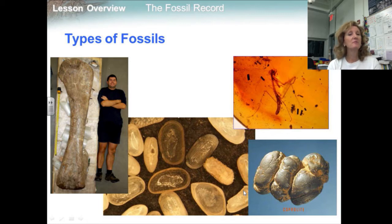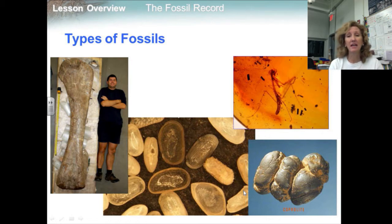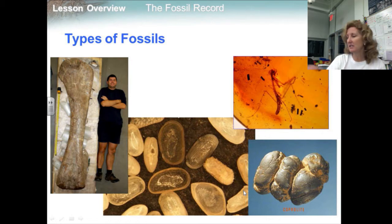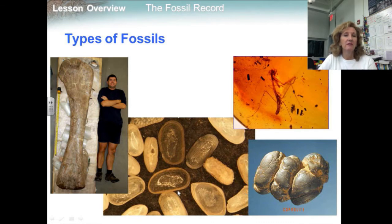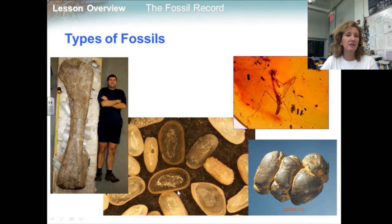Fossils can be as large and perfectly preserved as an entire animal, complete with skin, hair, scales, or feathers, and they can also be as tiny as bacteria, developing embryos, or even pollen grains. Many fossils are just fragments of an organism — teeth, pieces of jawbone, or bits of a leaf.